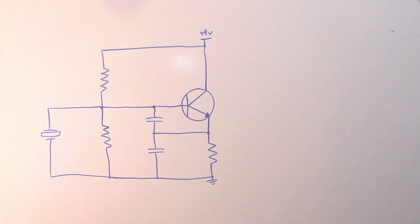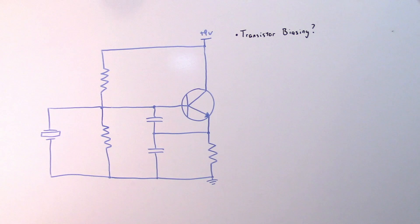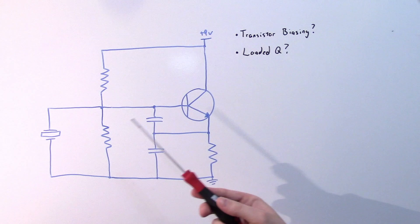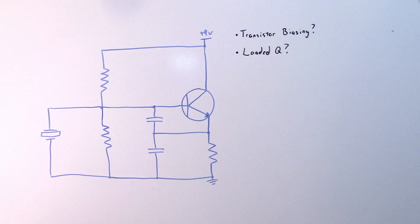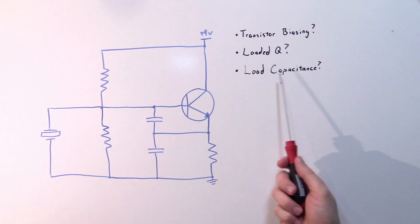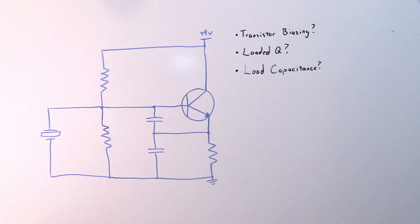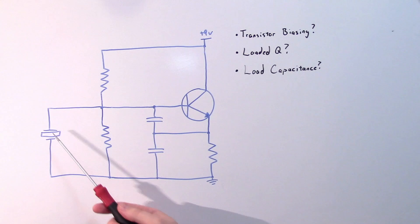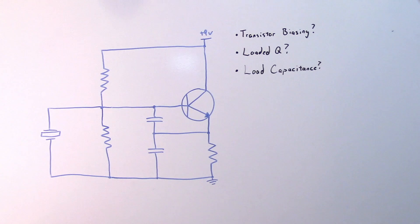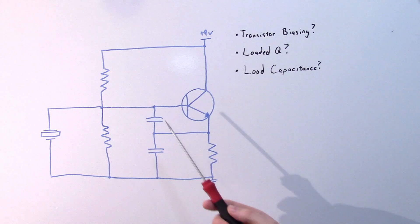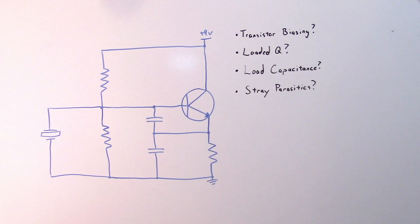Let's look at practical concerns for an actual Colpitts crystal oscillator design. First is transistor biasing, which directly affects the loaded Q of the crystal in circuit. We need to consider how much loaded Q and stability we need, and what load capacitance to present across the crystal — many crystals specify 18 or 20 picofarads to oscillate at their marked frequency. Also don't forget stray parasitics: there's internal base-emitter capacitance directly across C1, and the crystal itself has some shunt capacitance.